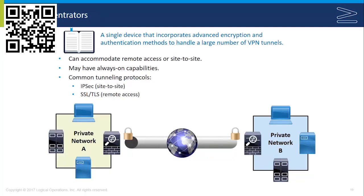Often when making a connection to a remote computer, especially for remote access VPNs, we're using a VPN concentrator — a single device that incorporates advanced encryption and authentication methods and has the ability to handle a large number of VPN tunnels. The remote access VPN is user-to-organization, while site-to-site is point-to-point between two VPN concentrators, routers, or firewalls. These may have always-on capabilities; for instance, Microsoft's DirectAccess technology is an always-on style VPN service where clients connected to the internet automatically make a tunneled connection back to the corporate office. VPN concentrators may be implemented via software or hardware.